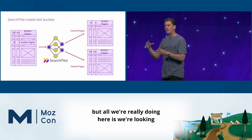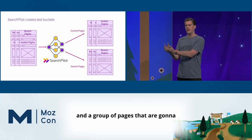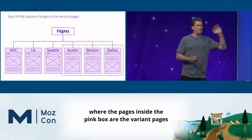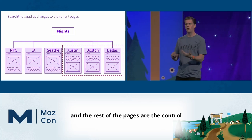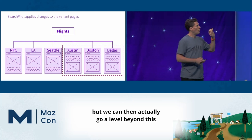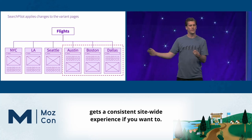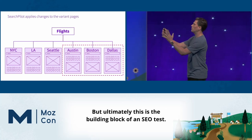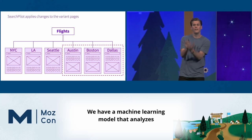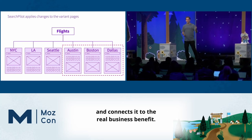During the test, the pages inside the variant group have the change applied to them, and the rest of the pages are the control and stay as they were. We can go a level beyond with full funnel testing that connects to revenue — you can cookie users so each individual gets a consistent site-wide experience. Ultimately, this is the building block of an SEO test. We use a machine learning model that analyzes the analytics data and states with statistical confidence whether this was a good idea, how much uplift it is, and connects it to the real business benefit.